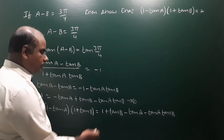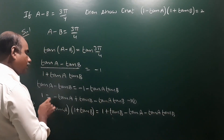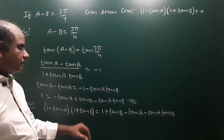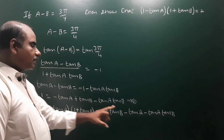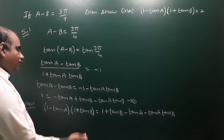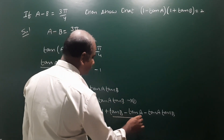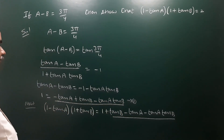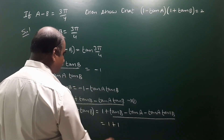Collecting the terms: 1 plus tan B minus tan A minus tan A tan B. Observe that tan B and tan A tan B terms match the equation already derived. These two expressions are the same, so we substitute the value.